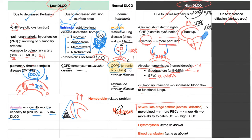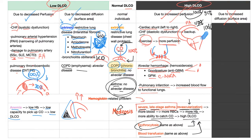Severe late-stage asthma — not regular asthma, which has normal DLCO — but the severe late stage because of neovascularization: new blood vessel formation means more blood vessels, more blood, more red blood cells, more hemoglobin, and more hemoglobin picks up more CO, increasing DLCO. Erythrocytosis and blood transfusion increase DLCO for the same reason. This neovascularization is usually due to VEGF — vascular endothelial growth factor.